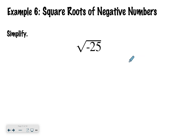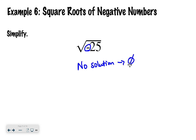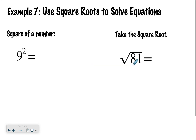Now let's look at the square root of negative 25. If you remember, I talked about how if there's a negative under the radical, you're going to get a domain error. So this is called no solution. You can use the symbol that looks like a zero with a slash through it, or just write out the words 'no solution' — either works.